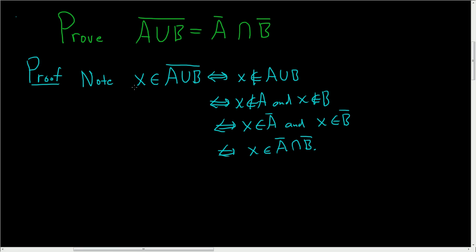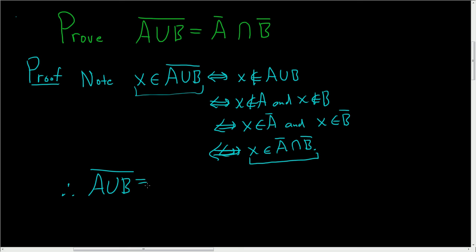So we have that whenever X is in the complement of A union B, X is in the complement of A intersected with the complement of B, and vice versa. We have these biconditional arrows. So therefore, the two sets are equal — the complement of A union B is equal to the complement of A intersected with the complement of B.